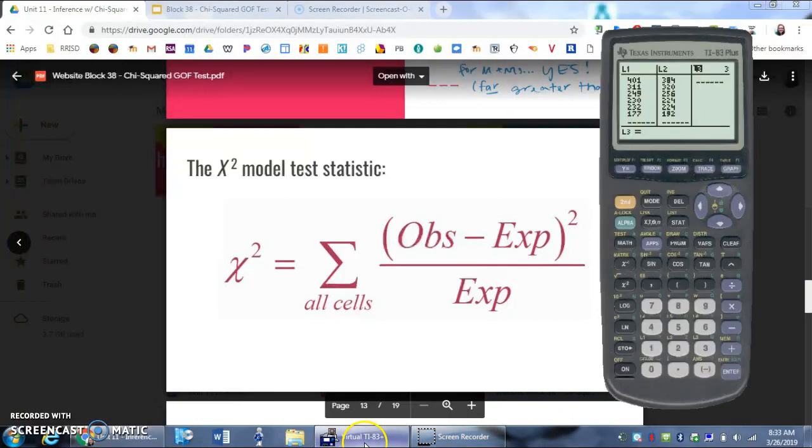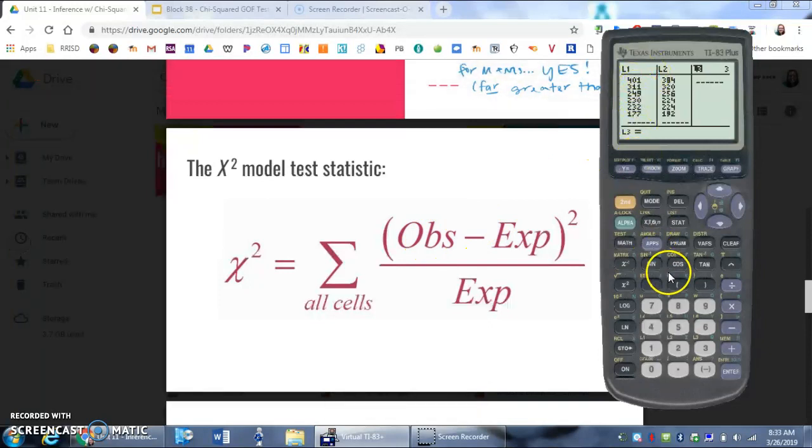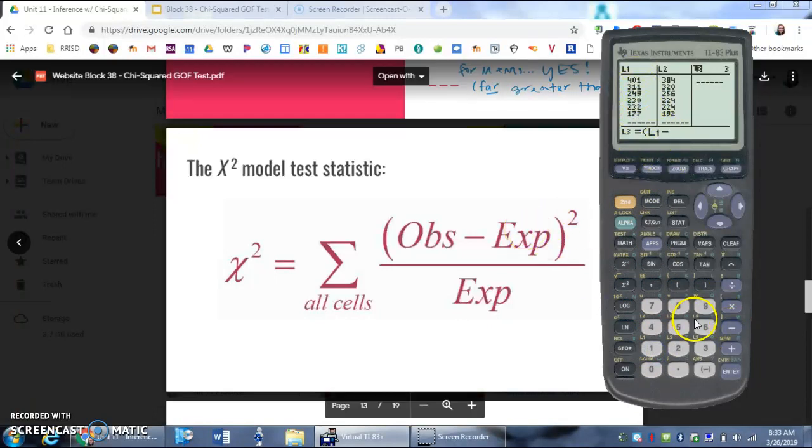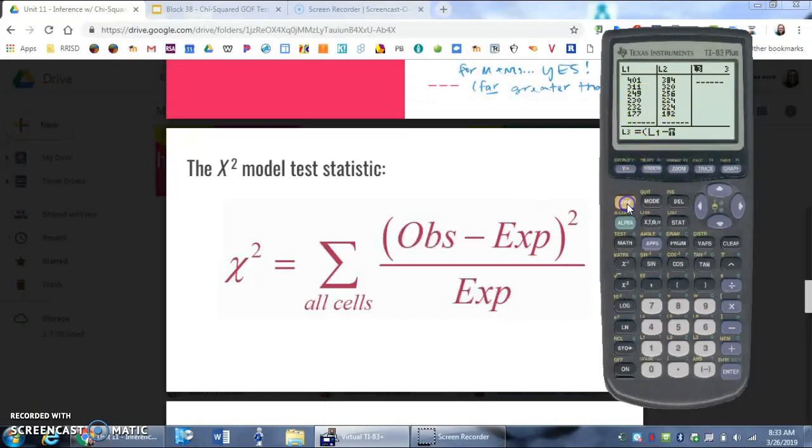So I have observed. My observed values are in L1. So I'm going to put parentheses and then second one. So L1, that's going to take the observed value, minus, and then it's expected. My expected values are in L2. So second two. Close parentheses. Square it, because that's what I'm doing. Observed minus expected squared.